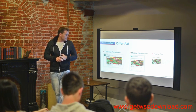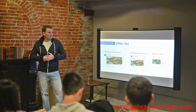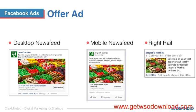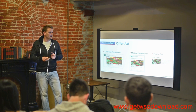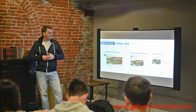Next is an offer ad — desktop newsfeed, mobile newsfeed, and right rail as well. So you can give some kind of discount or promotion code for users and have the end goal be the offer.